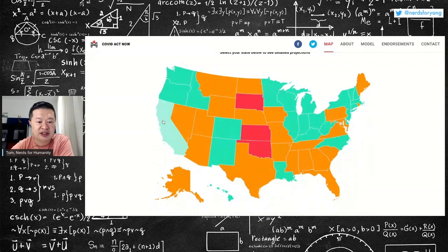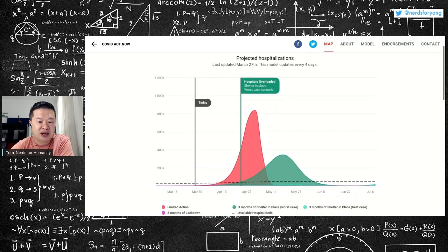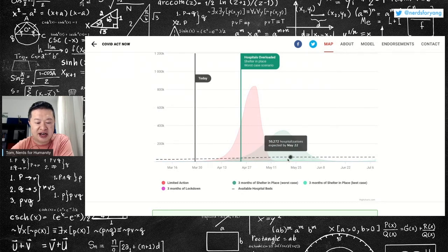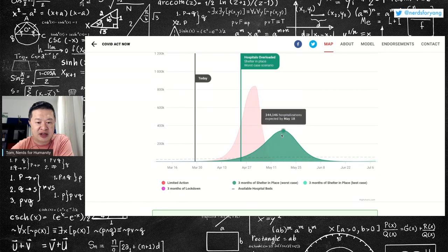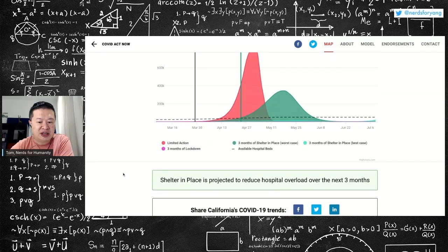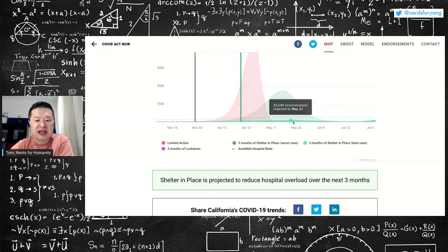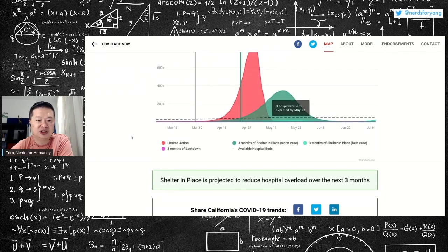And now let's look at California. And then I'll take one more state request. And then, oh, Jesus, California is not looking good. California. If they shelter in place for three months in the best case scenario, they have it. They are under the dotted line. In the worst case scenario, they could have 344,000 hospitalizations with only 50,000 beds. So the shelter in place is projected to reduce the overload over the next three months if it works as planned. So if you're in California, stay sheltering in place and continue to do that until this summer. Yikes.